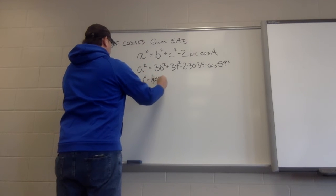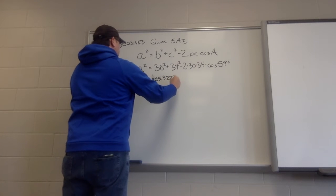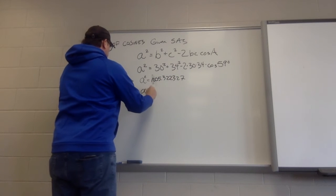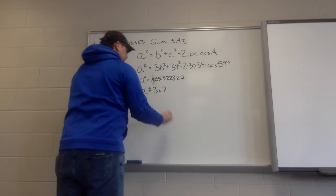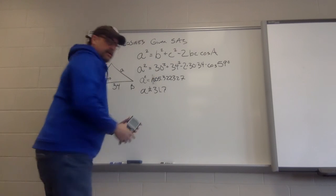One thousand five point three two two. Hit the square root button. It's approximately 31.7. That's that.